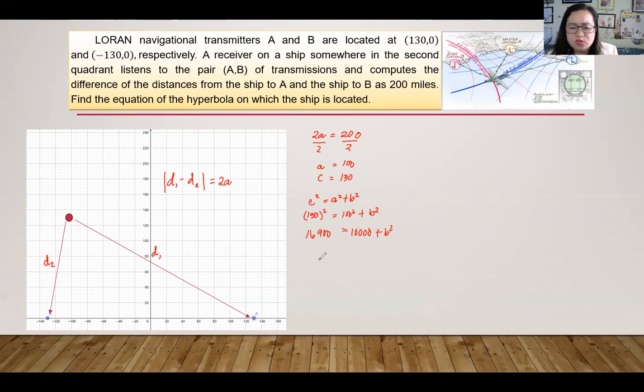Now we transpose 10,000 to the left side. So we will have 16,900 minus 10,000 equals B squared. Getting the difference, we will have 6,900 equals B squared.